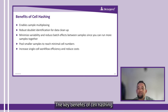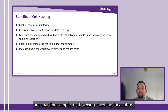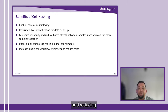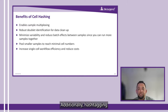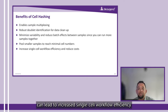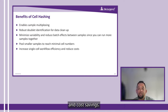The key benefits of cell hashing are: it enables sample multiplexing, allows for robust doublet identification for data cleanup, and minimizes variability and reduces batch effects between samples. Additionally, hashtagging allows for pooling of smaller samples to reach minimal cell numbers. Together, these benefits can lend to increased single-cell workflow efficiency and cost savings.